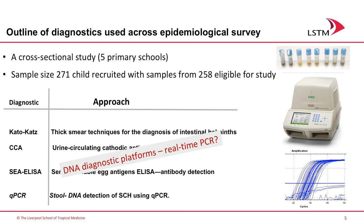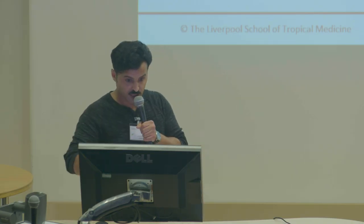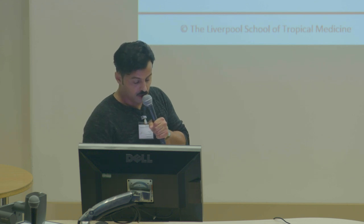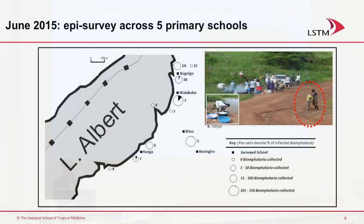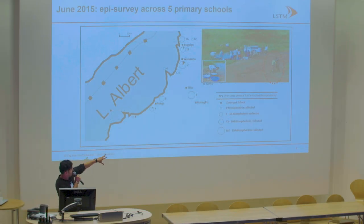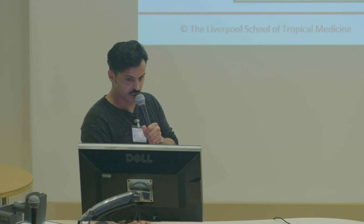The advantage of DNA detection is we can also detect more than schistosomiasis — we can detect Giardia, Entamoeba, Cryptosporidium, and other parasites. But Kato-Katz can only detect schistosomiasis and soil-transmitted helminths. We also collected some snails and found snails shedding cercariae, reflecting active transmission. We have five schools — three on the shorelines and two further away — to reflect high to low transmission settings and evaluate these diagnostics.